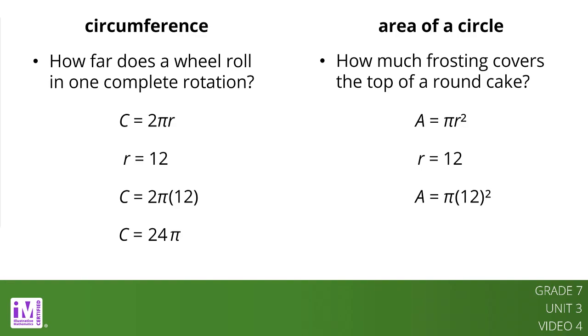12 squared is 144. So the area is 144 pi square cm. This means the frosting would need to cover an area of 144 pi square cm, which is about 450 square cm on the top of the cake.